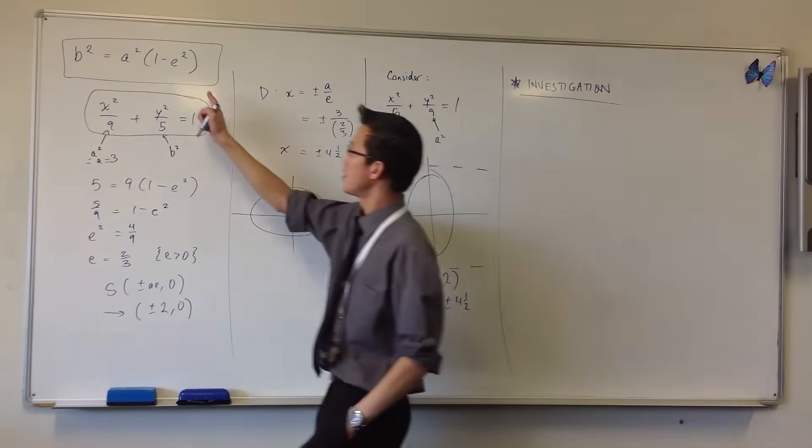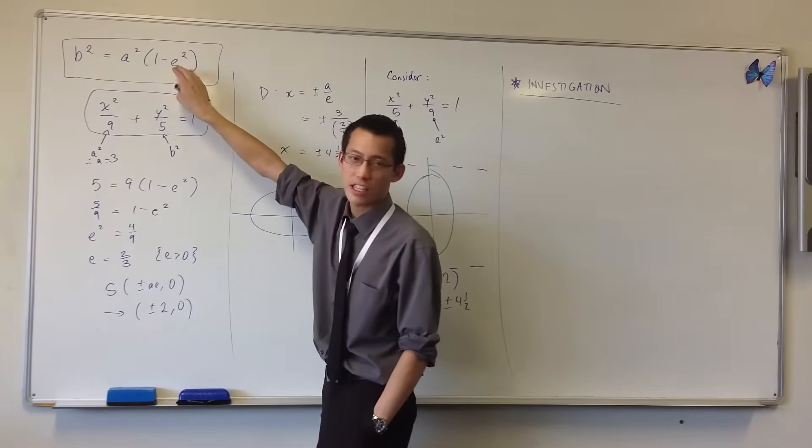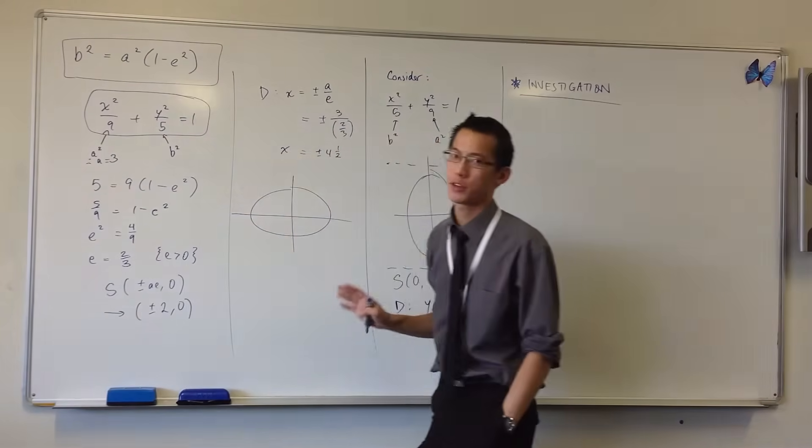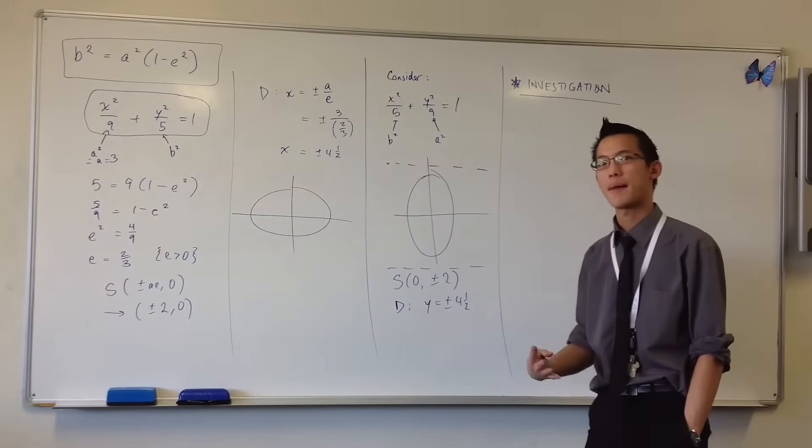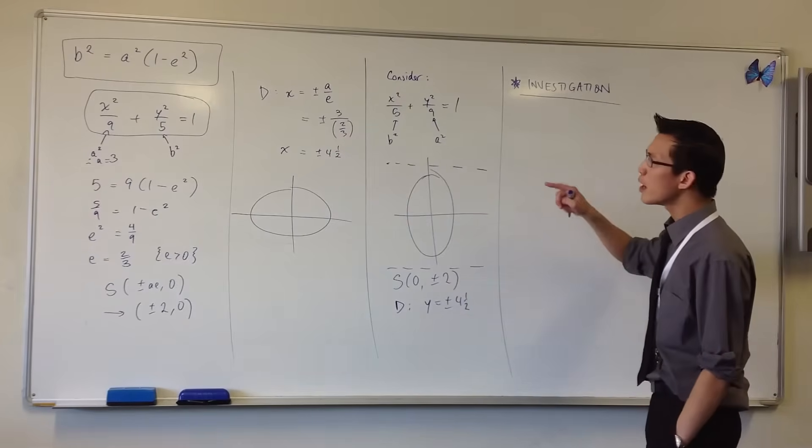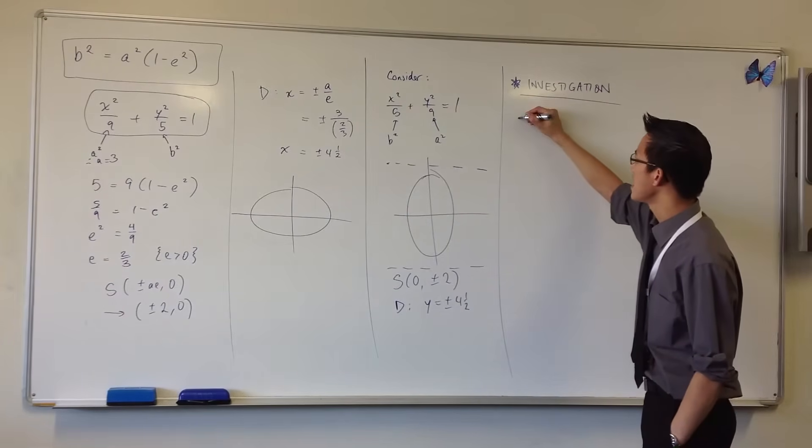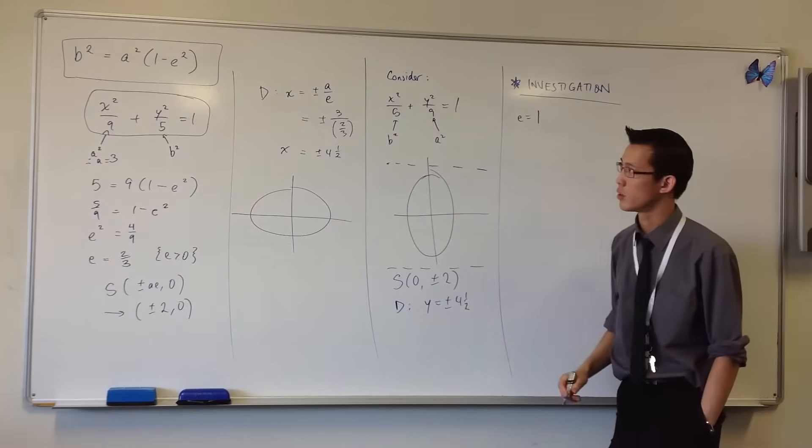So some of the questions in the textbook they'll say things like examine the behavior or consider what happens when. So I want us to think about this b² equals a²(1 minus e²) in particular as the eccentricity changes. That seems to be the most useful, fascinating thing. It gives us whole different shapes. What things do we already know? Well, if I consider e equals 1...